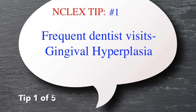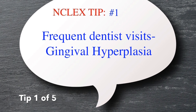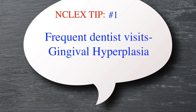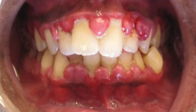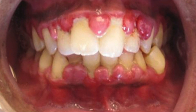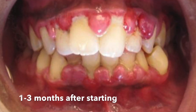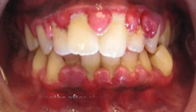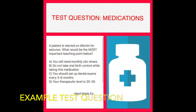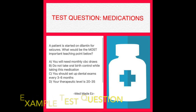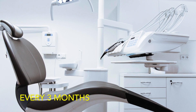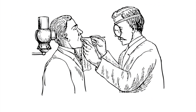Tip number one: frequent dental visits and good oral hygiene is so important to prevent gingival hyperplasia, or basically the overgrowth and enlargement of the gum tissue. This can start to develop in one to three months after starting this medication. You may see a test question that involves what kind of specialist you may need to see. Appointments for the dentist may need to be every three months or more frequent depending on you and your dentist.